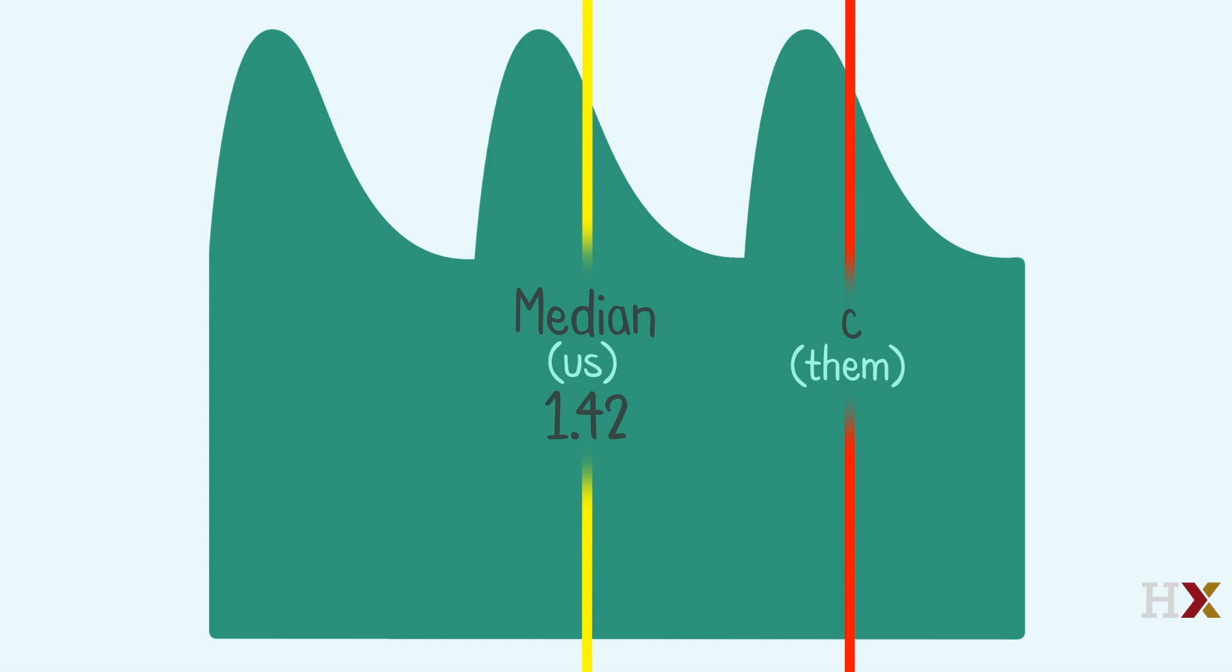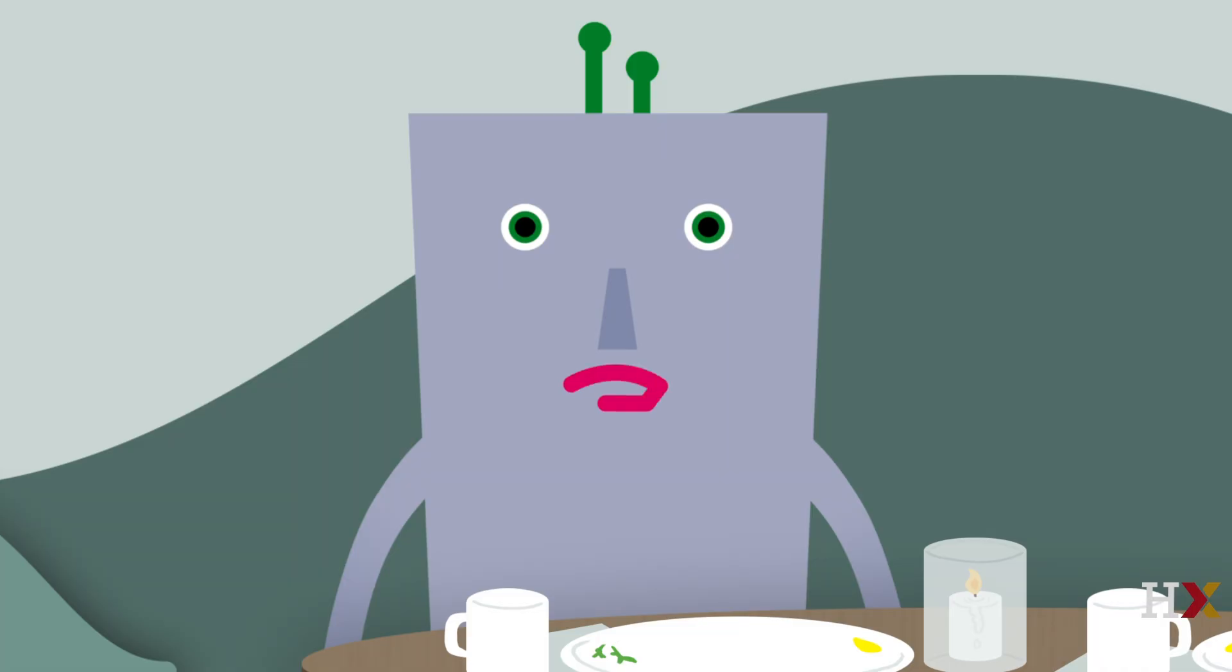If we guess the median and the other table guesses a different value c, we have more than a 50% chance that our guess will be closer. If c is greater than the median, we win for all the cases to the left of the median, plus everything up to halfway between the guesses. Similarly, if c is less than the median, we win for all cases to the right of the median, plus everything up to halfway between. Beautiful. So let's guess the median, 1.42.